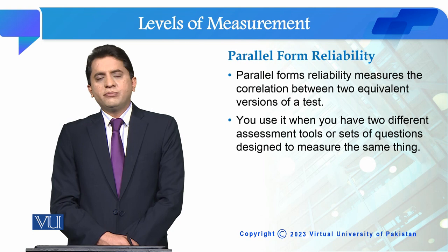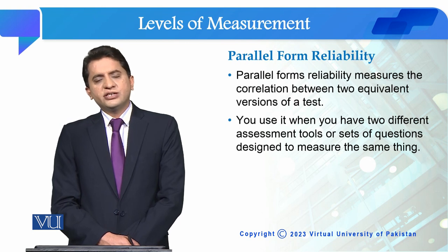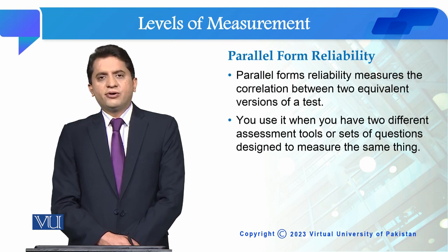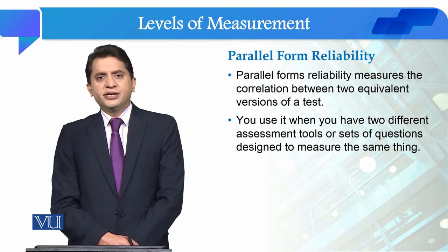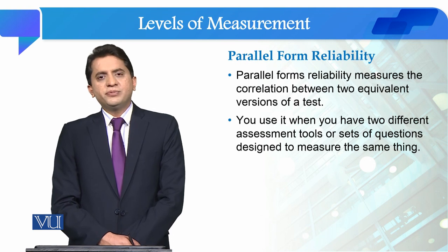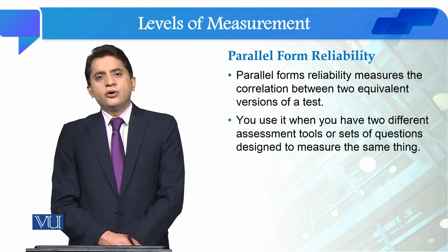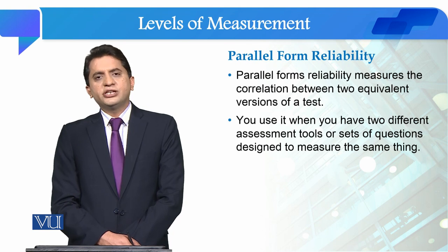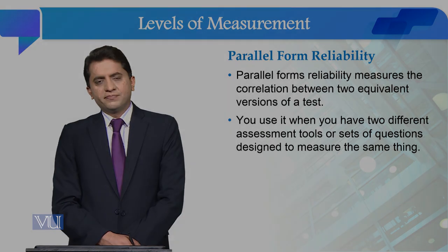So these were the two types of stability reliability: test-retest reliability and parallel form of reliability. In our next module, we will talk about consistency reliability and its types.